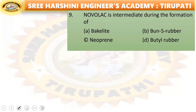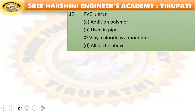Next: novolac is an intermediate during the formation of — bakelite, rubber, neoprene, or butyl rubber? Bakelite is the right answer. Novolac is the intermediate in the formation of bakelite.